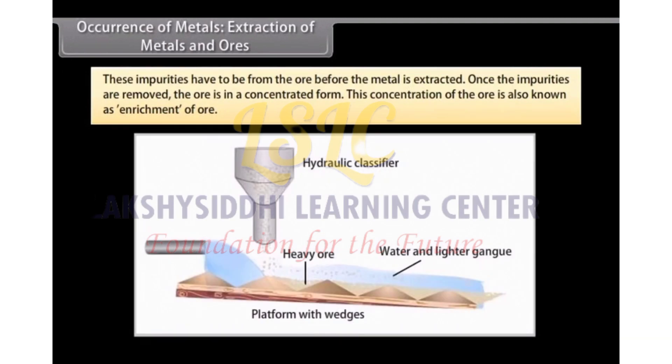These impurities have to be removed from the ore before the metal is extracted. Once the impurities are removed, the ore is in a concentrated form. This concentration of the ore is also known as enrichment of ore.